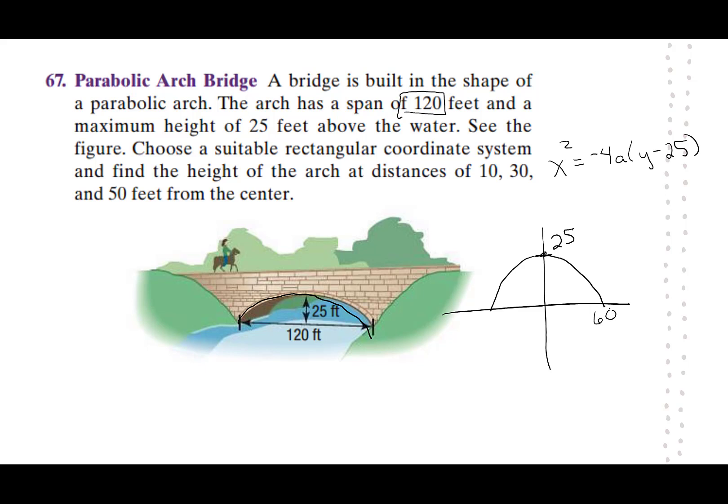Then it had this span of 120. Just like we did on the other bridge, we're going to split it 60 and 60. So I have 60 on the right, 60 on the left. That's going to help us out because if I look at this point, this point is 60, 0. That's going to help me solve for a. I can put 60 squared equals negative 4a, and then I have 0 minus 25. If I multiply this out, I get 60 squared, negative 25 times negative 4 is positive 100a. So 60 squared is 3,600. That's 100a. We're going to divide by 100. We're going to get 36. So we have a is 36.